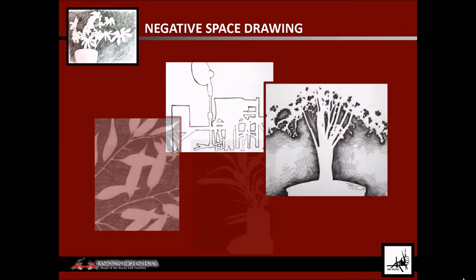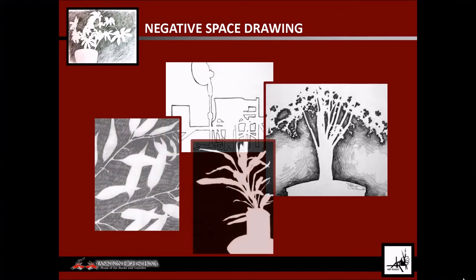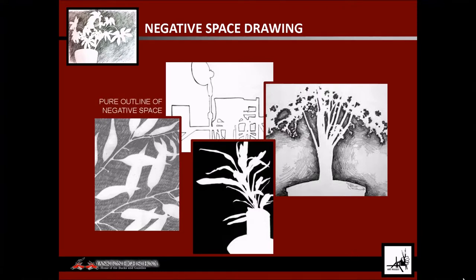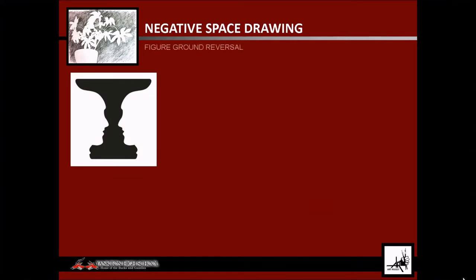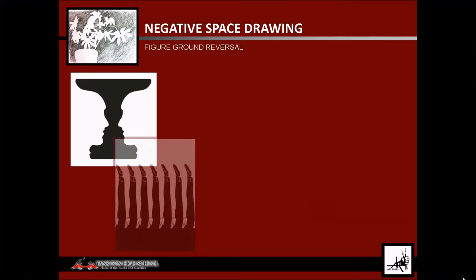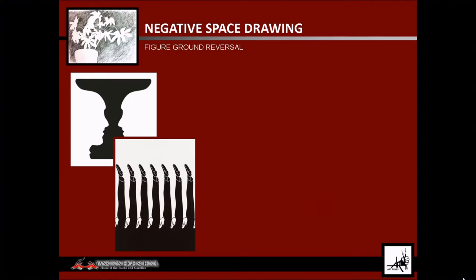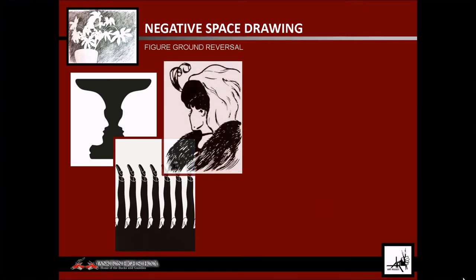When doing negative space drawing, instead of drawing the thing or things, you are to focus on and draw the open space — the air, the emptiness around the thing or things. If you do this correctly, you will end up with a pure outline of the negative space and in the process define the positive space. However, you should end up with no interior line details in the positive space — you're focused only on the negative space.